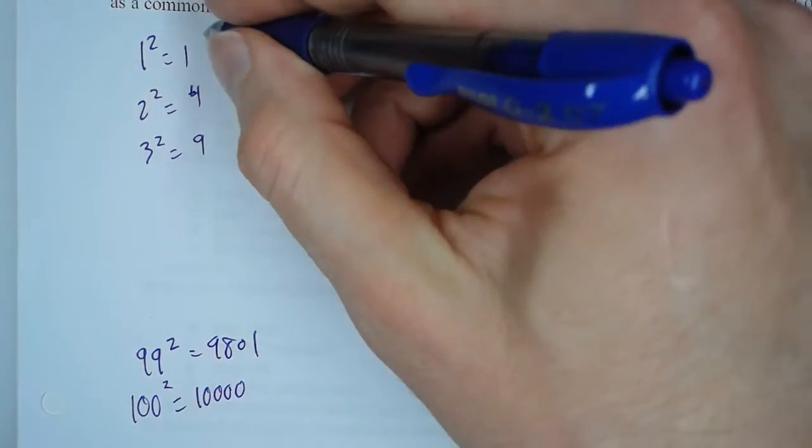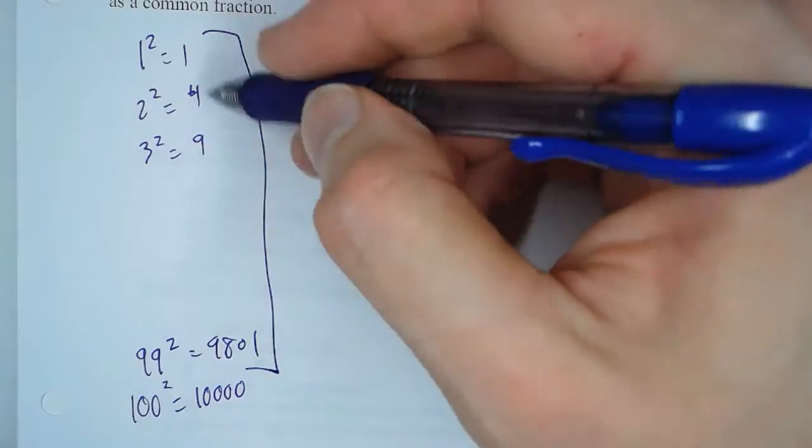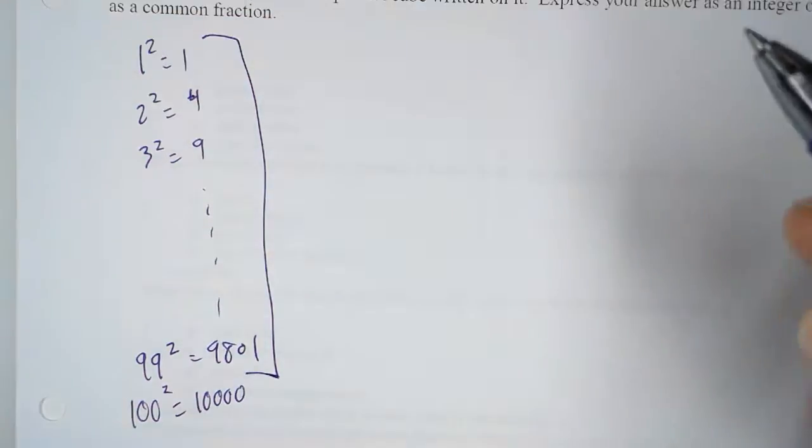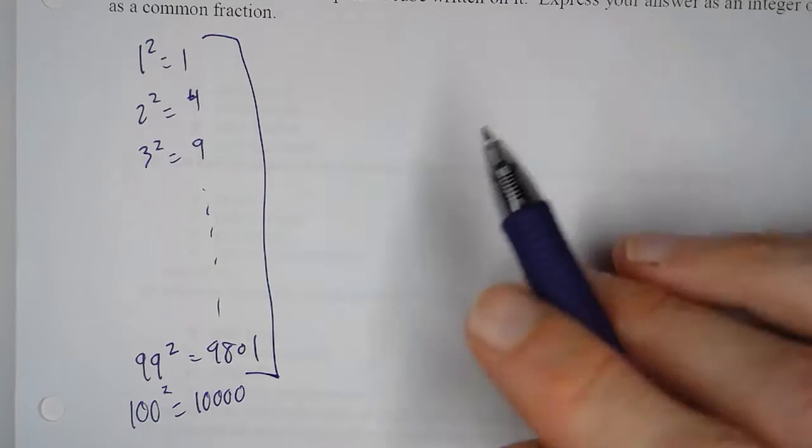So from here to here, these 99 numbers, 1, 4, 9, and so on, the question is, how many of them are also perfect cubes?